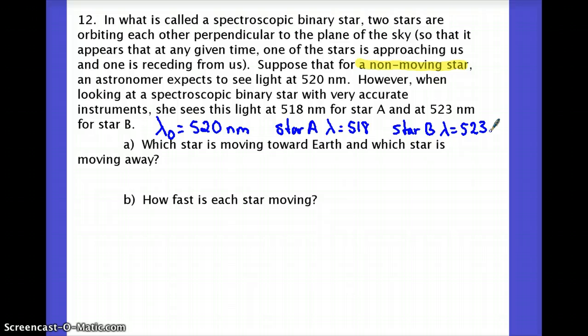So the first thing it asks is which one's moving towards us and which one's moving away from us. So we can just look at the wavelengths. We don't really even have to do any math to decide this. For star A, the observed wavelength is less than it should be. That means that star A is moving towards. And for star B, the observed wavelength, 523, is bigger than what it should be, 520. And so therefore, star B is moving away.